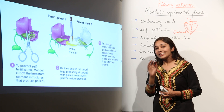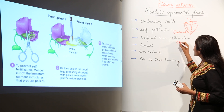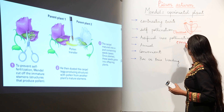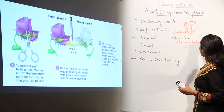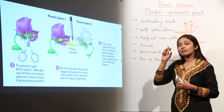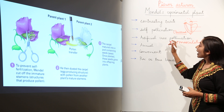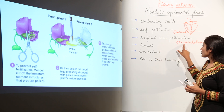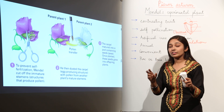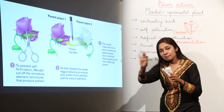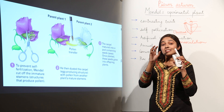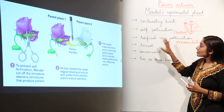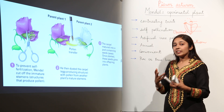This removal of anthers from the plant is known as emasculation. Remember the word emasculation — the removal of anthers from the flower. Artificial cross-pollination was easily achieved through emasculation, in which Mendel removed the anthers or stamens from the flower and dusted the desired pollen grains on it. This is another reason why Mendel chose the pea plant.